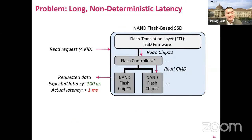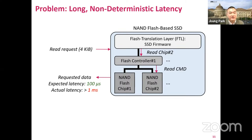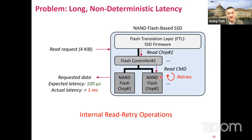So what is going on inside the SSD? There can be many possible reasons for this latency fluctuation, but one key reason is an internal process of modern SSDs called read-retry. For an incoming host read request, the SSD firmware — commonly called the Flash Translation Layer, or FTL in short — sends a read request to the target chip through the flash controller. The problem is that sometimes the SSD retries the same read command again and again, which increases read latency linearly with the number of read-retries.